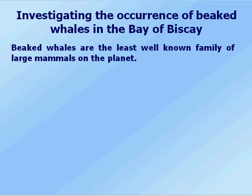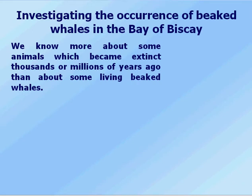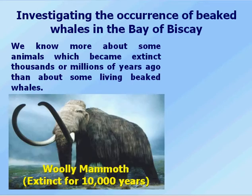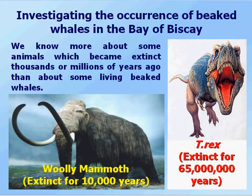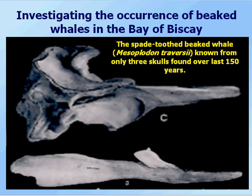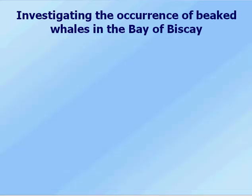So we start with the beaked whales. Beaked whales are the least well-known family of large mammals on the planet. We know more about some animals that became extinct millions of years ago than we do about some living beaked whales. For example, we know more about the woolly mammoth, extinct for about 10,000 years, or even the Tyrannosaurus rex, extinct for 65 million years, than we do about the spade-toothed beaked whale. It's only known from three skulls collected over the last 150 years, and we have no idea what this species actually looks like. There's very little known about beaked whales, and any information we can gather will help us conserve them — preventing impacts from climate change, ingestion of plastic bags, and noise in the environment.